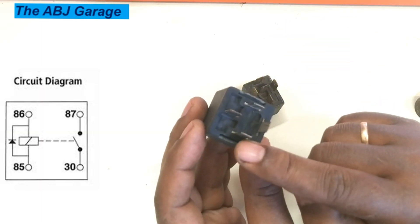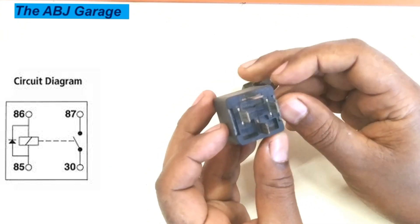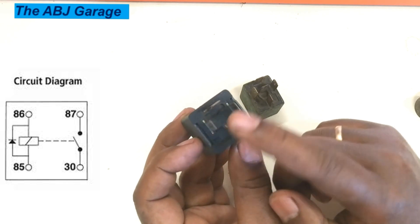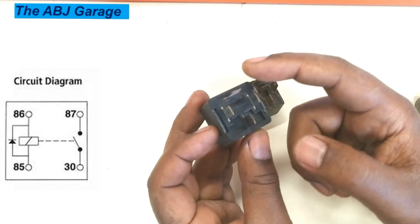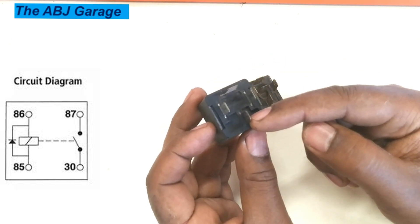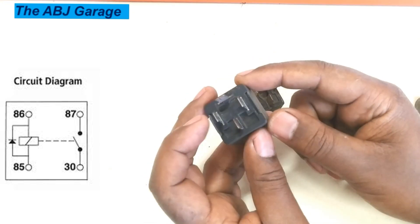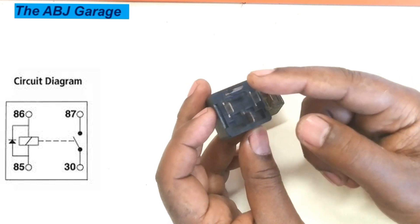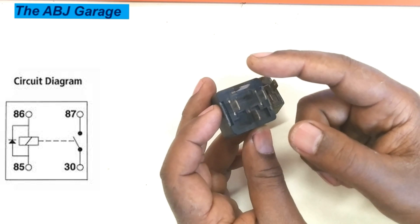Terminal 85 and terminal 86 are designated as the electromagnetic switch circuit. Terminal 30 and terminal 87 are the normally open switch circuit. When terminals 85 and 86 are electromagnetically energized, that will activate the contact point between 87 and 30 — only then will we have continuity between terminal 87 and 30.